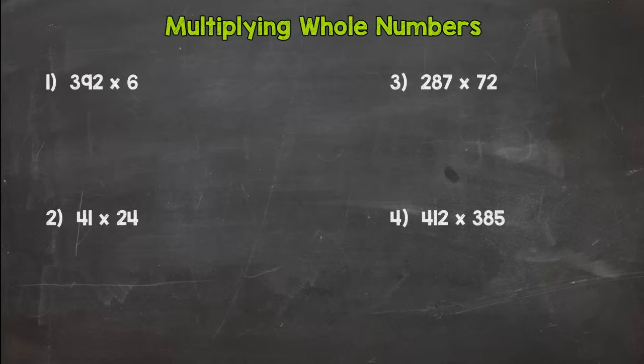We're going to hop into number one here. We are going to line up our problem vertically which means up and down. 392 times 6. The first thing we do, we take 6 times 2 which is 12, then we take the 6 to the 9, 6 times 9 is 54 plus that 1 is 55. 6 times 3 is 18 plus that 5 is 23. Put our comma in there, 2,352.